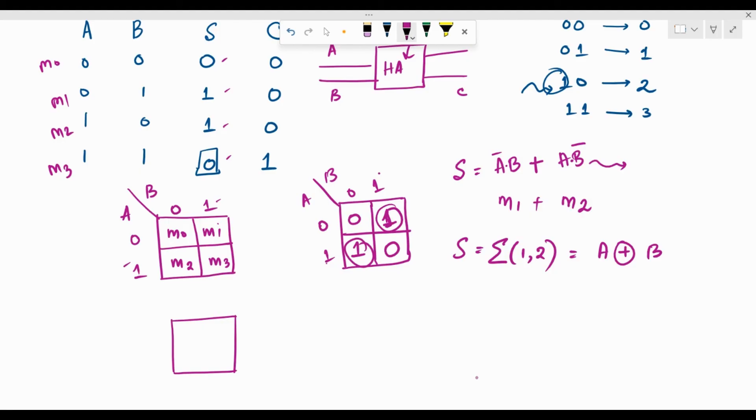Which means m3 which is nothing but A dot B. We know that from the previous video if you observe. So, here again, for the K-map, we can do the same thing. This again involves no simplification as such.